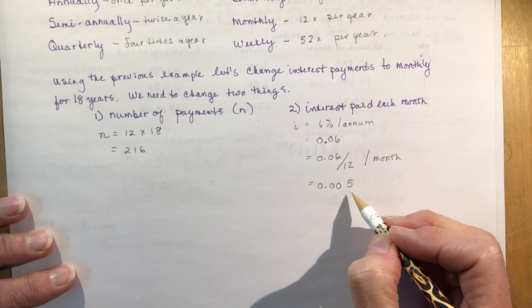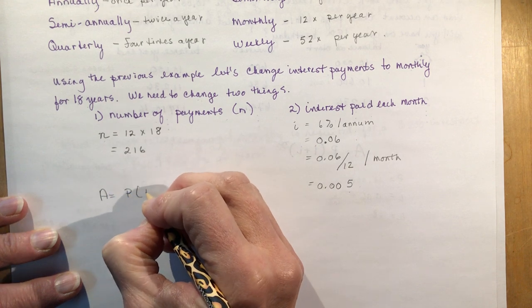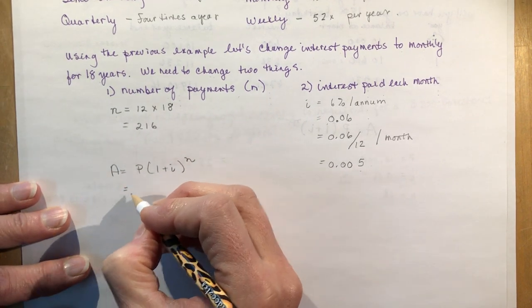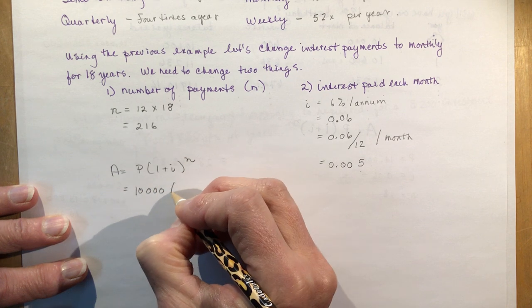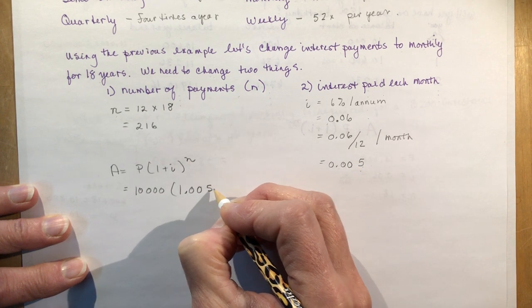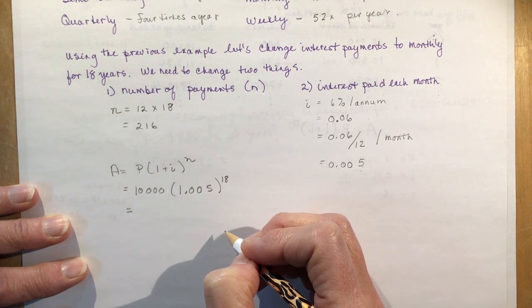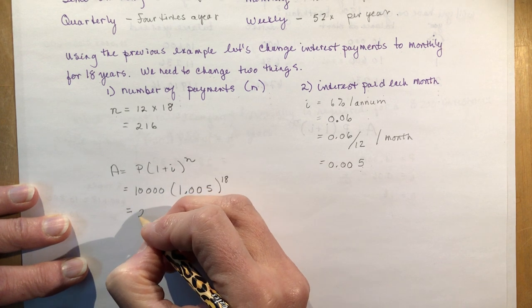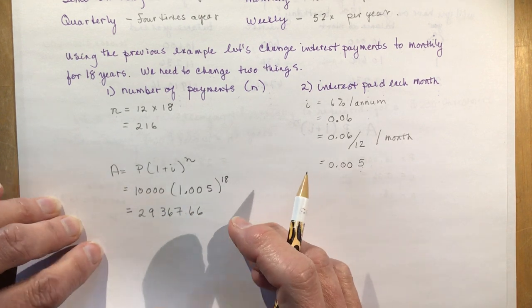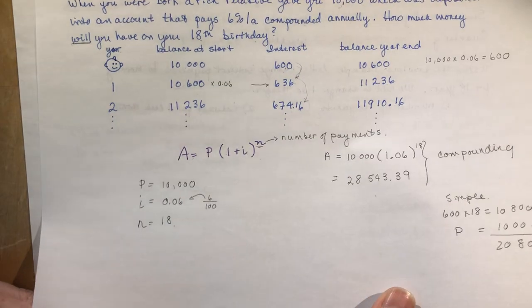Let's see how much more money we get with monthly compounding. A equals P times (1 + i) to the N — you should memorize that equation, it's a very important one; your teacher might give it to you. So we have 10,000 times (1.005) to the power of 216. If you do that, you get $29,367.66. The annually compounded result was $28,543.